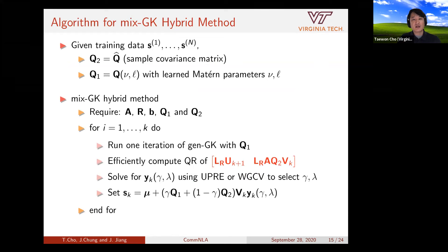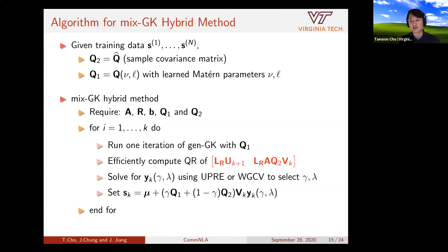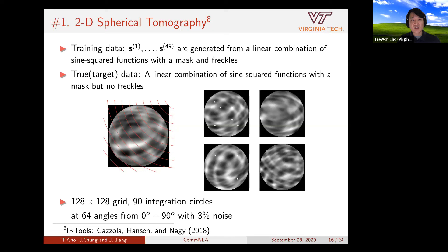To summarize the algorithm: from the training set, we define the sample covariance matrix Q-hat and the Matérn covariance matrix Q with its parameters. We obtain Q1 and Q2 from these — in general Q1 and Q2 don't have to be these choices, but we use them here for the numerical examples. We then apply Golub-Kahan bi-diagonalization for Q1, use efficient QR for the large matrix, reduce to a small space, and solve for y_k using regularization to determine gamma and lambda, then recover the desired parameter s_k.